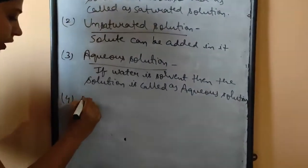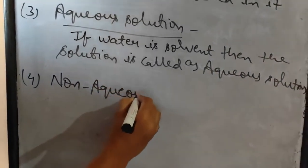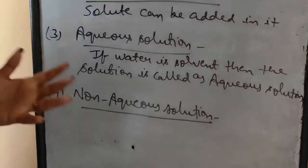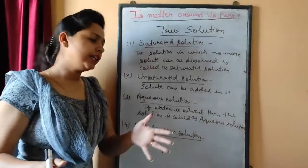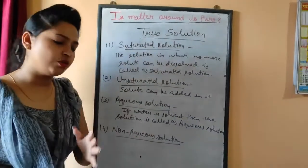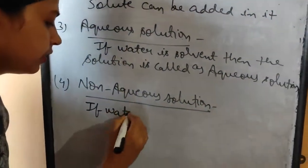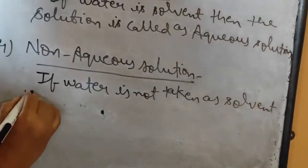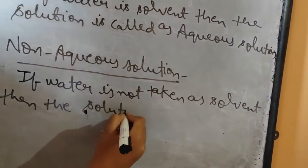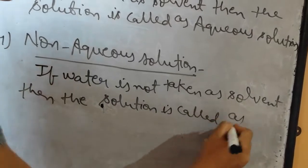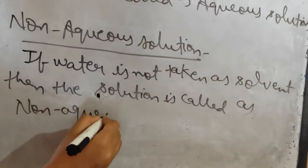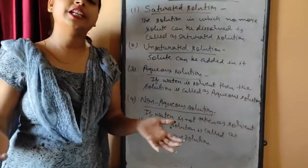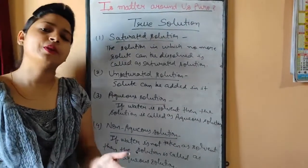The next one is non-aqueous solution. If water is not the solvent — if other solvents are used like alcohol, benzene, or acetone — then that solution is called a non-aqueous solution. If water is not taken as solvent, we can add alcohol, acetone, benzene, or any organic solvent to make the solution. So these are the four terms regarding true solution: saturated solution, unsaturated solution, aqueous solution, and non-aqueous solution.